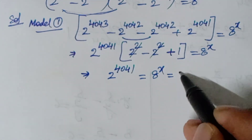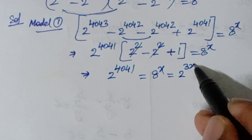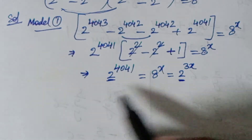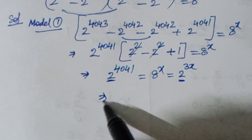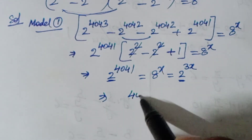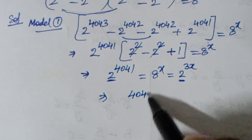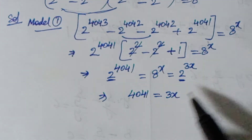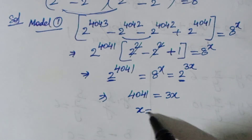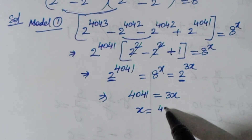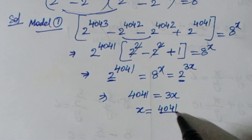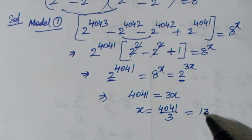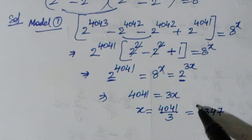Now 8 to the power of x can be written as 2 to the power of 3x. Since the bases are equal, the powers must be equal. So 4041 equals 3x, which gives x equals 4041 divided by 3, so x equals 1347.